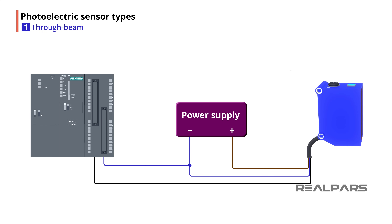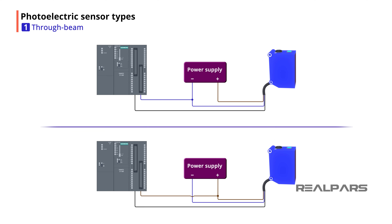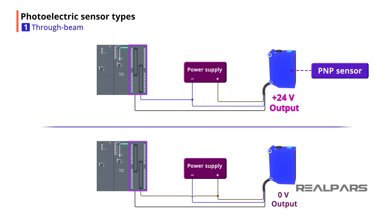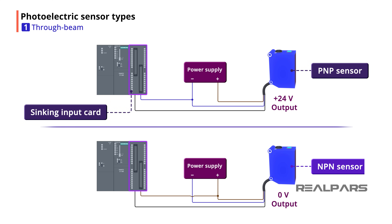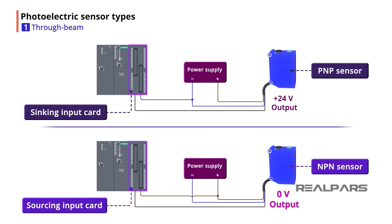The sensor's output is the signal from the sensor to the PLC. Depending on the sensor, the output can be a positive signal or a negative signal. The type of sensor output signal you will use depends on what type of PLC input card the sensor is connected to. For example, if the sensor is PNP, meaning it has a positive output signal, the sensor's output wire will have to be connected to a sinking input card. If the sensor is NPN, the output signal is negative, and the output wire will need to be connected to a sourcing input card.